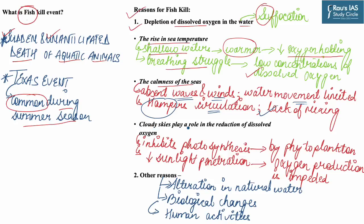Another reason for depletion of oxygen is cloudy skies. The presence of clouds inhibits photosynthesis by phytoplanktons, which generate oxygen as a by-product. With reduced sunlight penetration, oxygen production is impeded, resulting in lower levels of dissolved oxygen. Other reasons for depletion of dissolved oxygen include alteration in natural water chemistry, biological changes, rising ocean temperatures, and chemical pollution due to miscellaneous human activities.